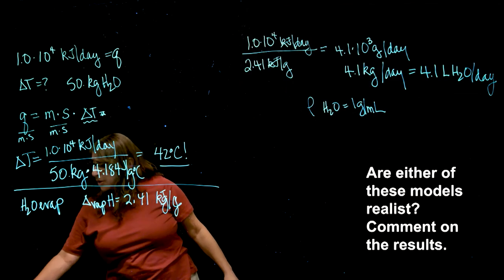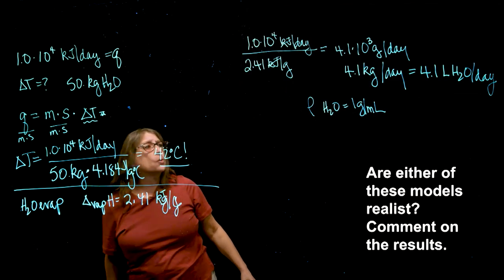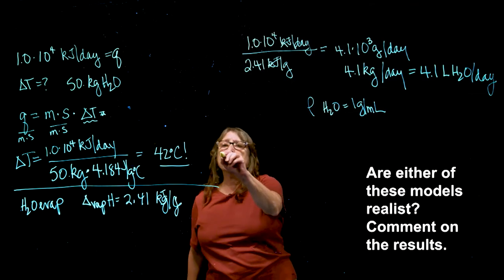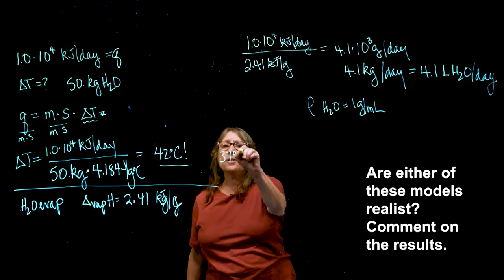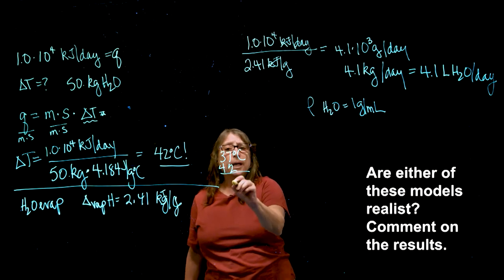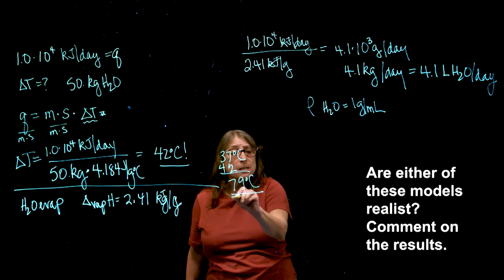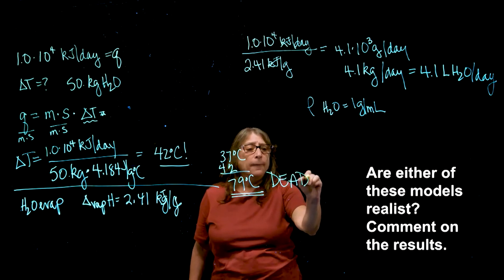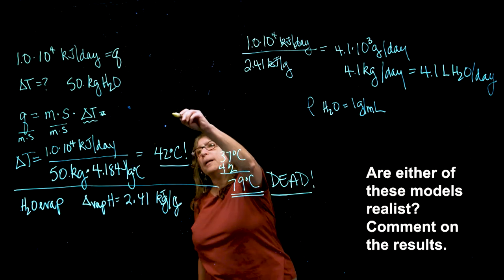And the next question is, are either of these results realistic comment? Well, if our body temperature went from 37 degrees C and I add 42, it's going to be 79 degrees Celsius, not Fahrenheit. Looks like we'd be dead. So this is not a good model.